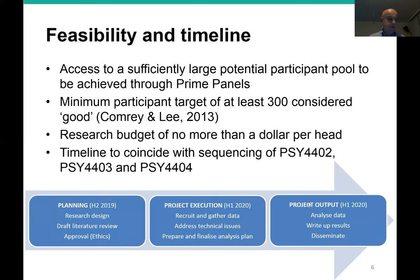As far as feasibility and timeline are concerned, the good thing about Prime Panels is that it facilitates access to a sufficiently large sample — in this case we're looking at around 350 participants. According to Connery and Lee, a sample size of between 300 and 500 is considered a good size, so that's where we're aiming. The use of Prime Panels is also very cost effective, with an anticipated budget in the order of about a dollar per participant. The project timeline is intended to coincide with the sequencing of Psychology 4402, 4403, and 4404, with the next major deliverable being a draft literature review and a submission to — and hopefully subsequent approval from — the ethics committee to enable the project to proceed.